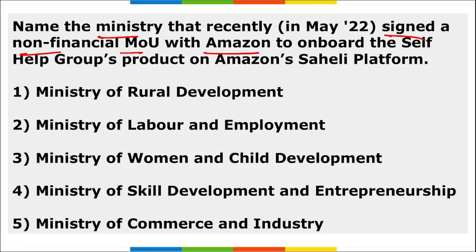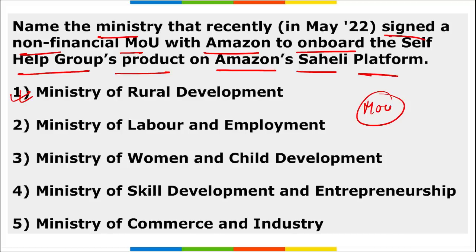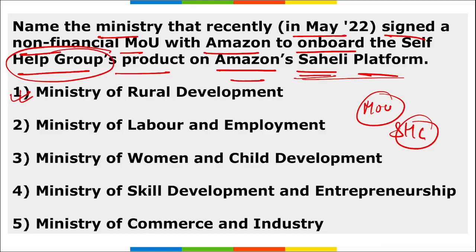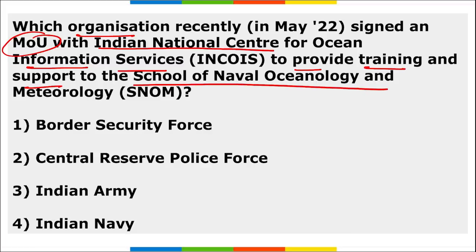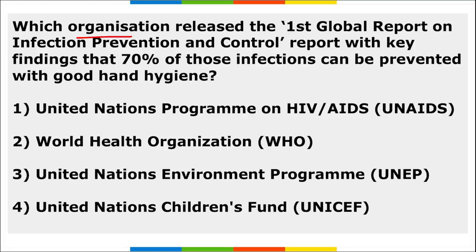The Ministry of Rural Development signed a non-financial MoU with Amazon to onboard self-help groups' products on the Amazon Saheli platform, boosting small self-help groups. The Indian Navy signed an MoU with the Indian National Centre for Ocean Information Services to provide training and support to the School of Naval Oceanology and Meteorology.